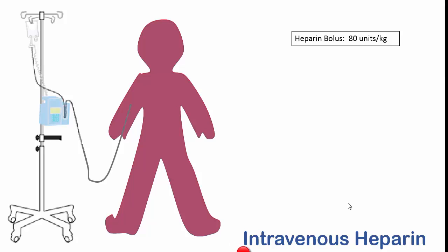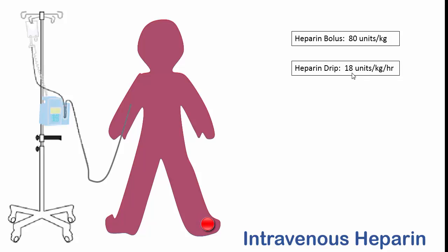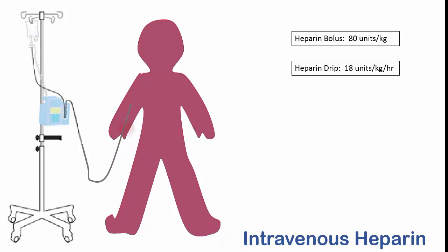We would like to offset this, and so the second part of the intravenous heparin order is for a heparin drip. You'll notice that this is a significantly smaller amount — less than one fourth the units — and it is still per kilogram, which means we'll need to multiply by the patient's weight. It is also per hour, meaning that it is an IV rate that we will set on the infusion pump. Once we calculate the correct rate in milliliters per hour, the infusion pump will add heparin to the patient's body, hopefully at the exact same rate that the body is eliminating heparin, and we will once again restore the heparin level.